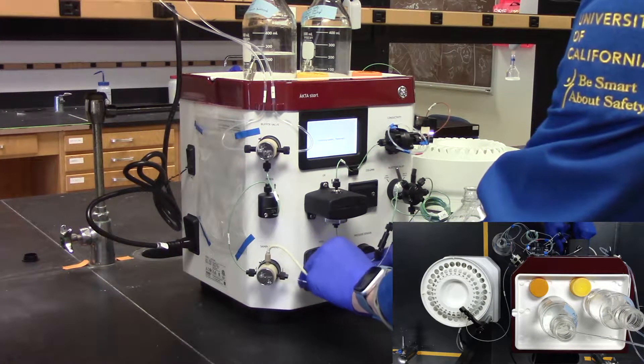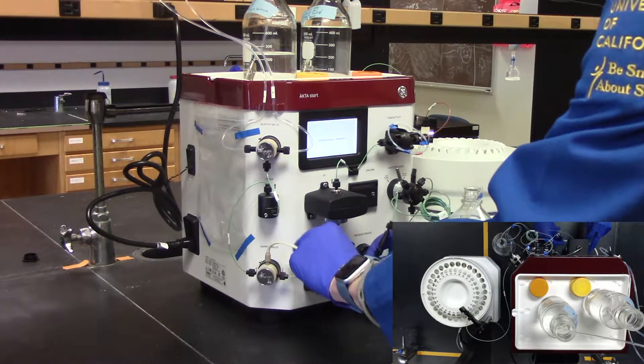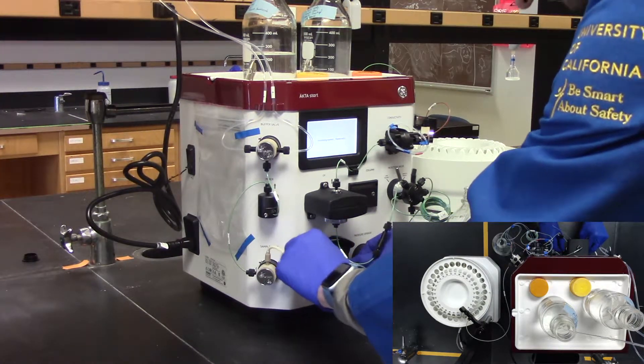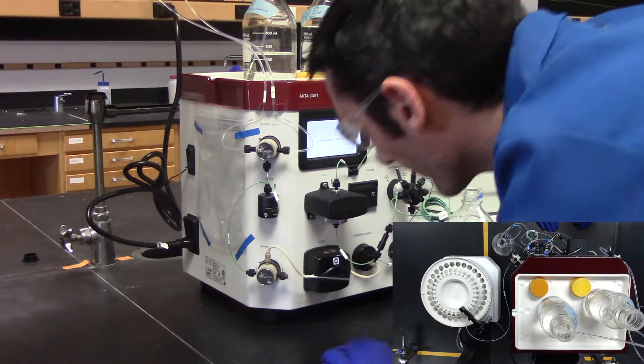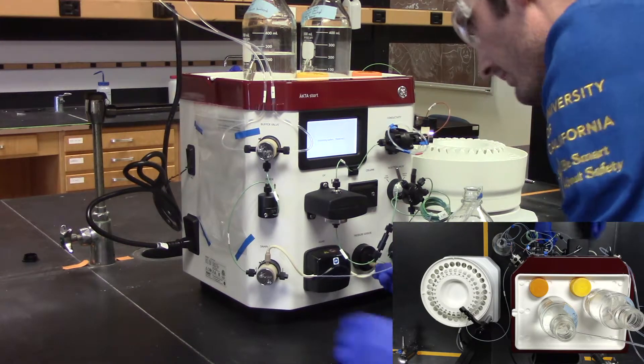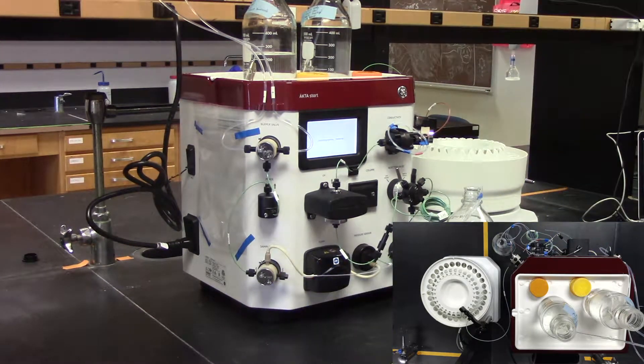Next, we need to insert the line into the peristaltic pump. Open up the clamp of the peristaltic pump and insert the line. Place the line perfectly centered on the peristaltic pump and clamp it shut. Be sure the line is not being pulled from the sample valve or the pressure sensor.